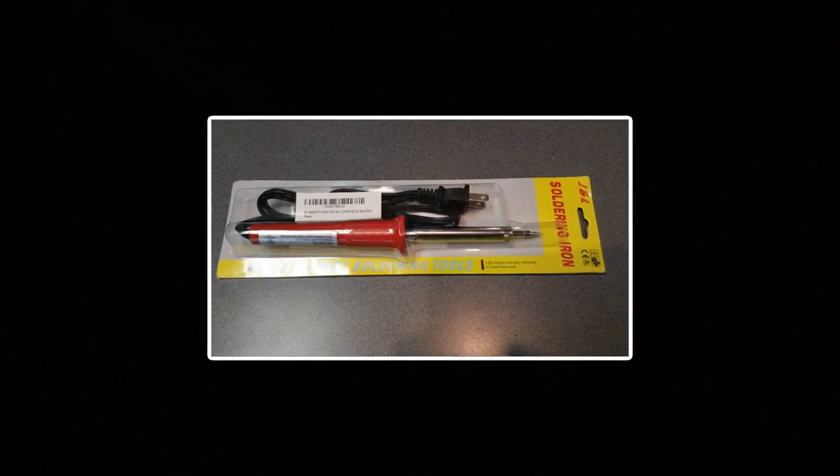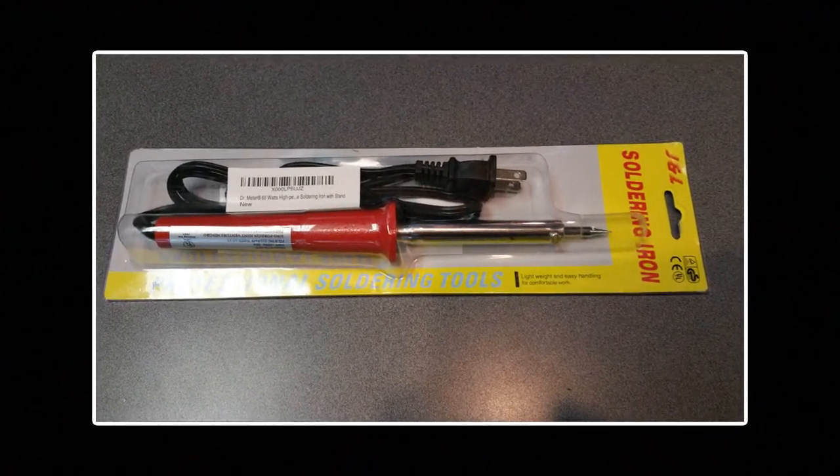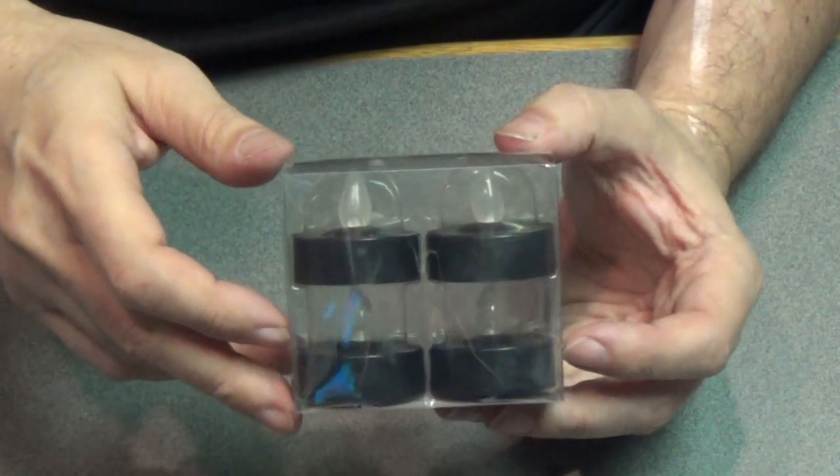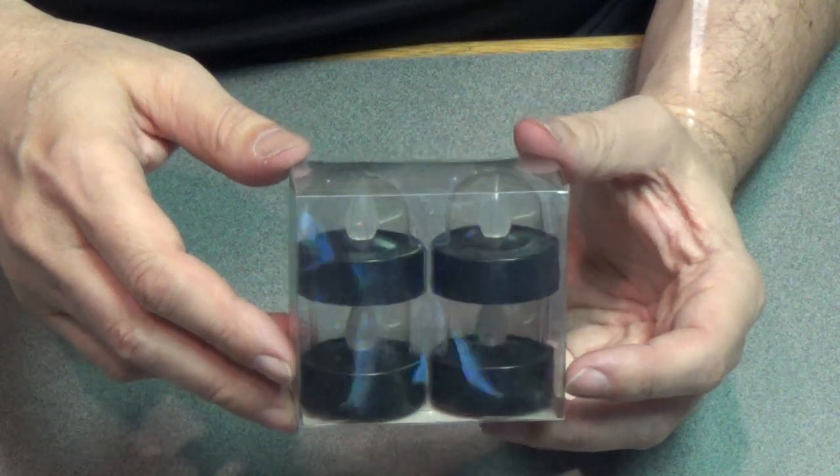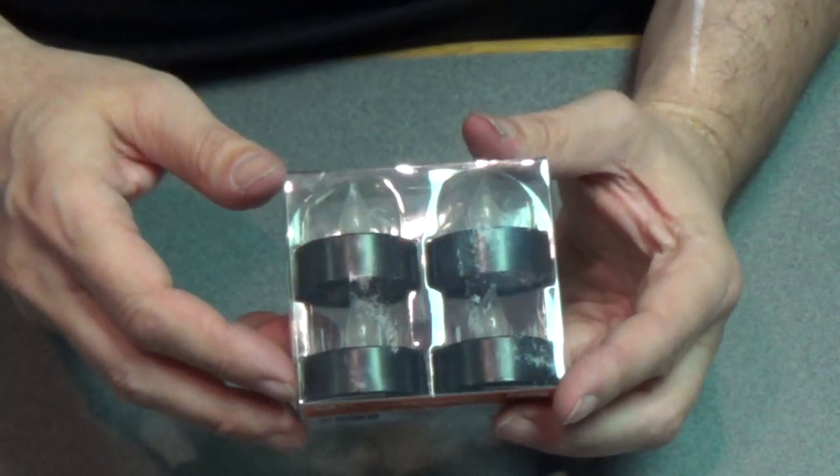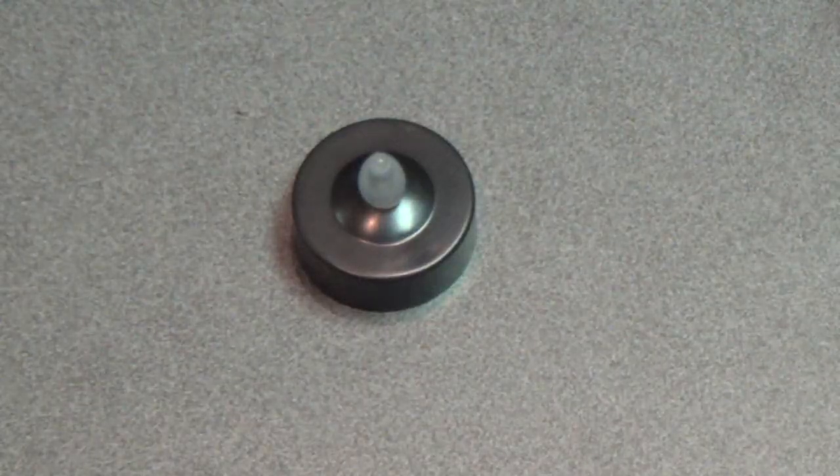To start, I had to gather some supplies. I got this soldering iron, just a cheap soldering iron. I also picked up this pack of tea lights from Walmart. They sell these around Halloween. They're black tea lights.